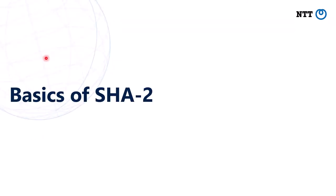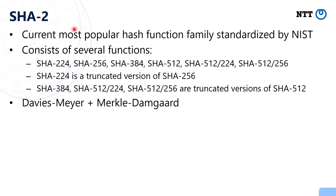Next, I would like to explain about the basics of SHA-2. SHA-2 is the current most popular hash function family standardized by NIST. It consists of several functions: SHA-224 is a truncated version of SHA-256, and other variants are truncated versions of SHA-512. SHA-2 is built based on the Davies-Meyer construction and the Merkle-Damgård construction.